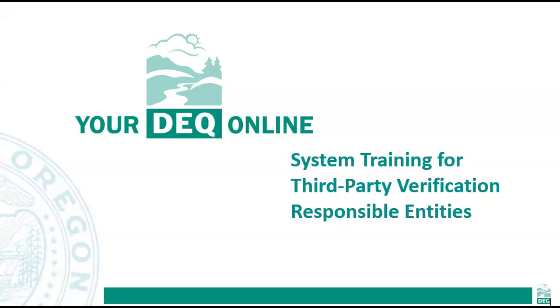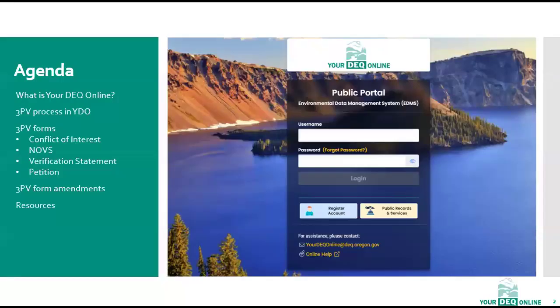Hello, and welcome to Your DEQ Online third-party verification process training for responsible entities. This training is intended for regulated entities who report to our Greenhouse Gas Reporting Program and are required to have their reporting verified. We'll begin today with a brief overview of Your DEQ Online and why DEQ is making the switch to this system for its Greenhouse Gas Reporting Program. We'll then cover how the 3PV process works in YDO, including how 3PV forms are submitted and amended, and we'll conclude with where to find additional YDO resources.